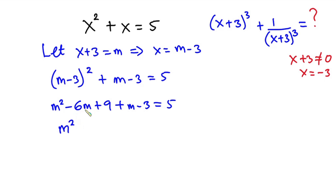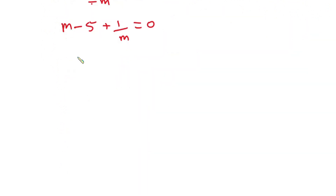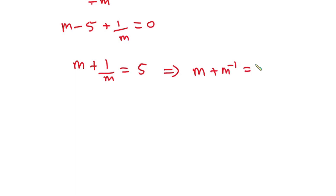Combining like terms: m² minus 5m plus 1 equals zero. Dividing through by m gives m minus 5 plus 1/m equals zero, which implies m + 1/m equals 5. This is also written as m + m⁻¹ equals 5. I'll call this Equation 1.